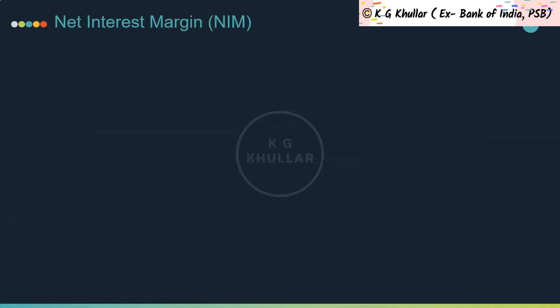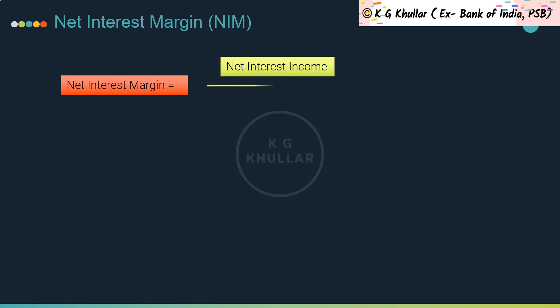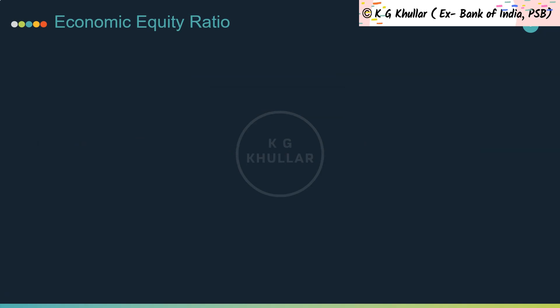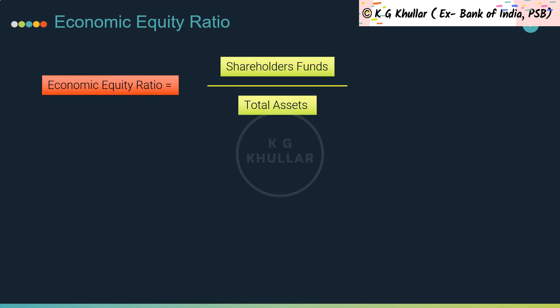Next, let's look at net interest margin. Net interest margin reveals the amount of money a bank is earning in interest on loans compared to the amount it is paying in interest on deposits, and is a key indicator of a bank's profitability and growth. NIM is defined as net interest income divided by average total assets, where average total assets equals aggregate assets at end of year plus aggregate assets at end of preceding year, divided by 2. The economic equity ratio is the ratio of shareholders' funds to total assets, measuring shifts in owned funds relative to total funds, and gauges the sustenance of a bank.